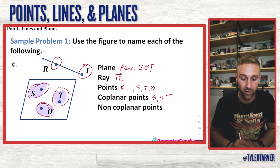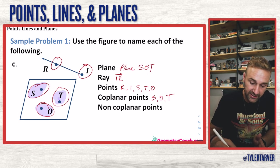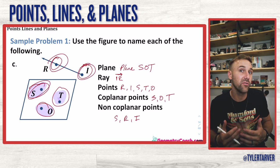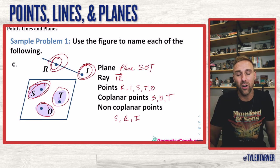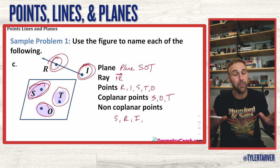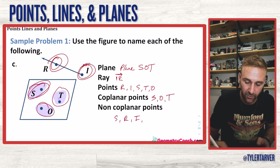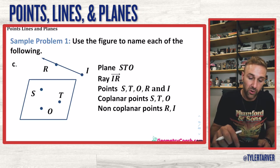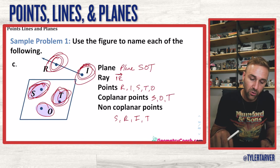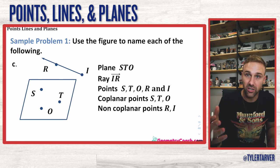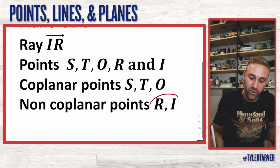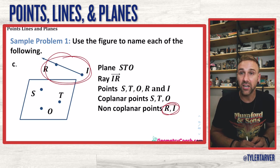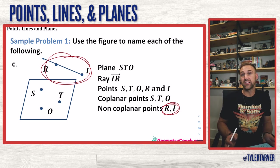For co-planar points, I look at which ones are all in the same plane — S, O, and T. For non-co-planar points, I'd list S, R, I, and T. Checking the answer: the answer only listed two points for non-co-planar, so it might be safer to just list two, since you need at least three points to make a plane.